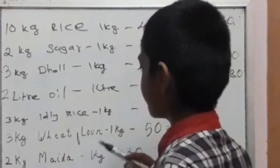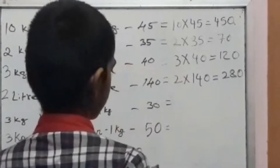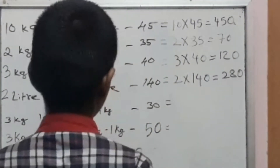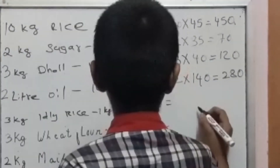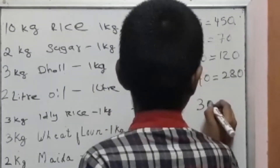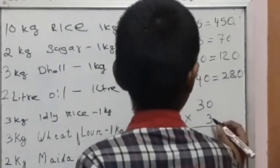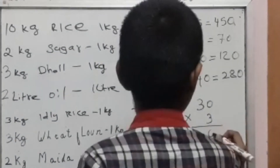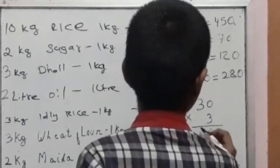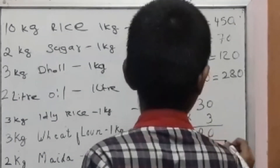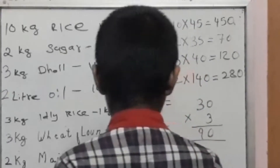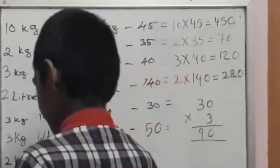3 kg, 1 kg equal to 30. 3 into 30. 3 zeros are 0. 3 threes are 9. So the answer is 90.